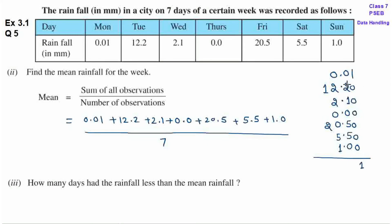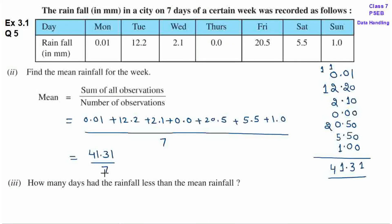यहां पर: 0 plus 2 = 2, plus 1 = 3, plus 0 = 3, plus 5 = 8, plus 5 = 13. So यहां पर आगया 3, 1 carry हो गया. Decimals के नीचे decimal. 5 plus 1 = 6, plus 2 = 8, plus 2 = 10, plus 1 = 11. So 1 carry हो गया. 2 plus 1 = 3, plus 1 = 4. यह आगया 41.31. Mean equals to 41.31 upon 7.